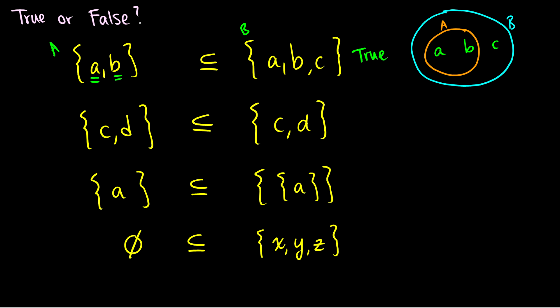What about: is {C, D} a subset of {C, D}? The answer is yes, that is true. Every element in our set A is a member of set B — C is in A therefore C is in B, and D is in A therefore D is in B.